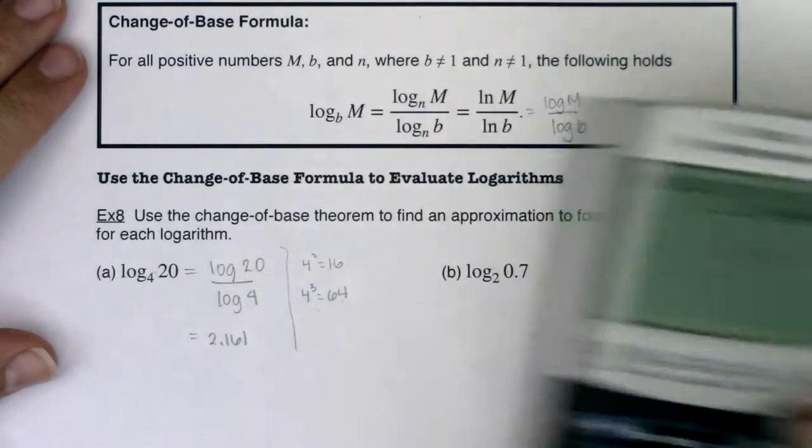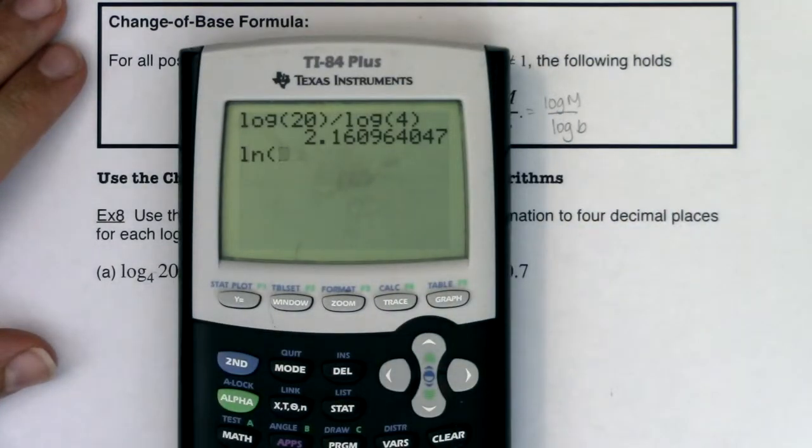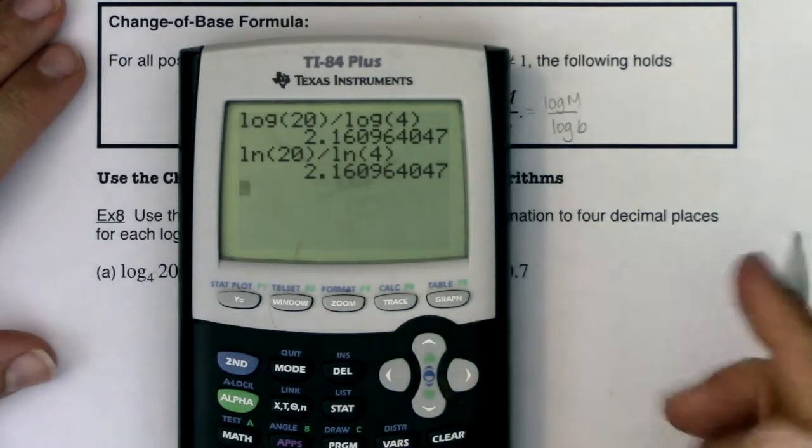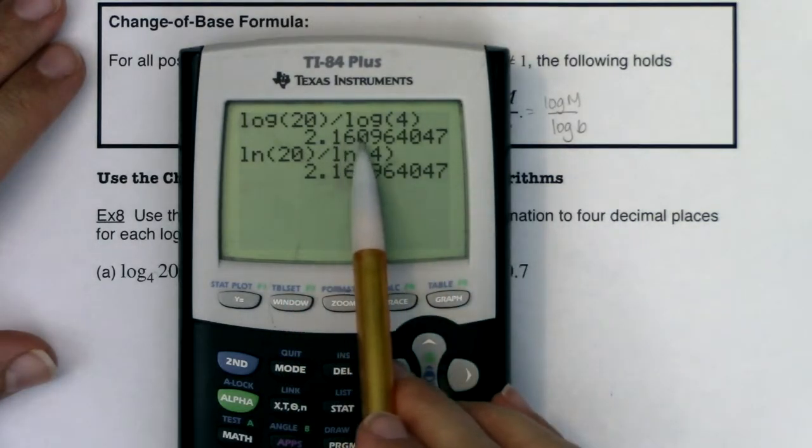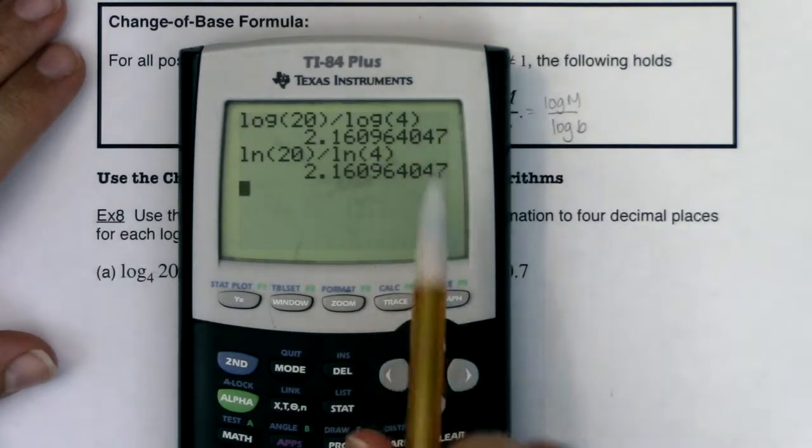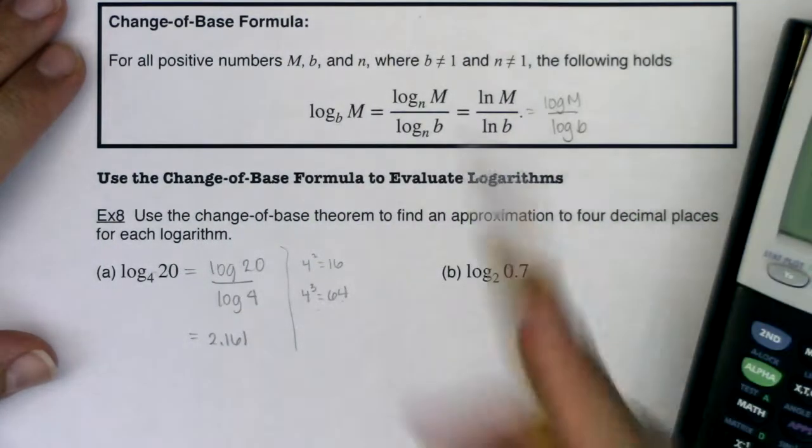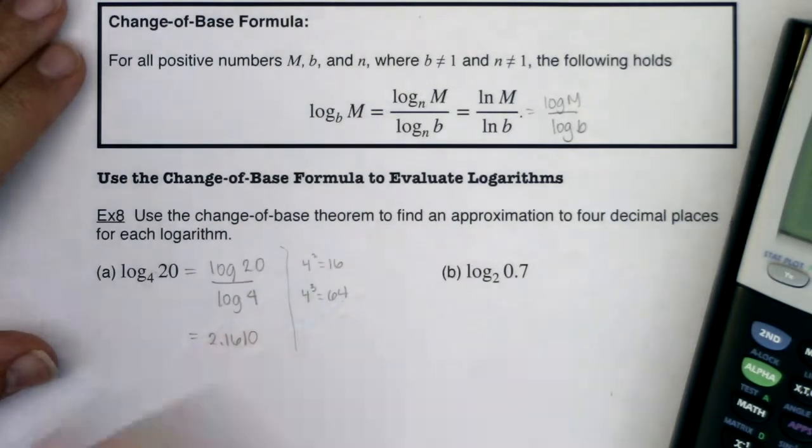Now, I alternately could have done ln of 20 divided by ln of 4, and I could have still gotten 2.161. Oh, actually we needed to go 4 decimal places, my bad, so this would have been 2.1609, but this is telling us to round up, so I would round this to 1, 0, there is my 4th decimal place.